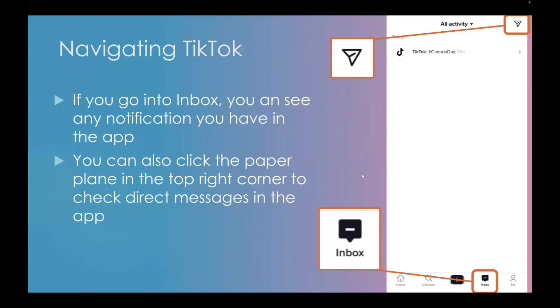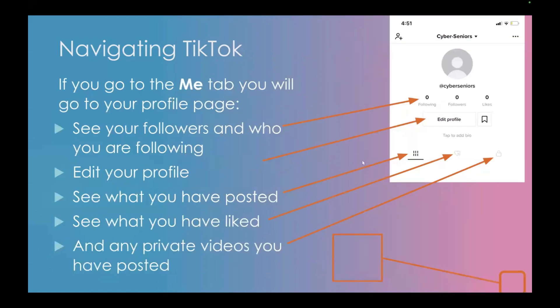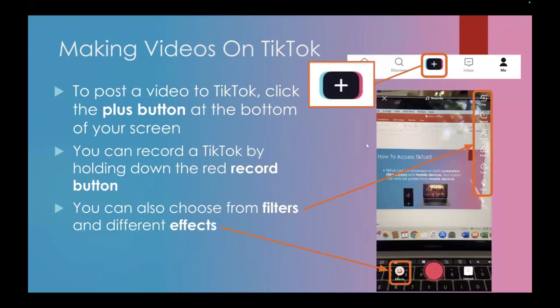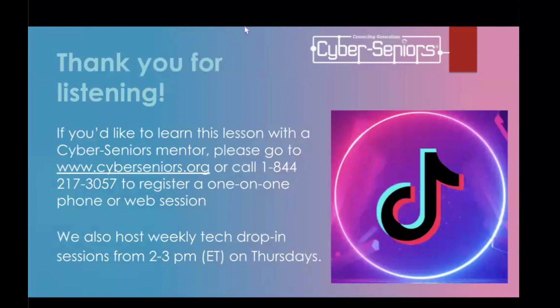In your inbox you can see any notifications and click the paper plane icon in the top right corner to check direct messages. In the 'Me' tab you'll see your profile page, who your followers are, who you're following, what you've posted, videos you've liked, and any private videos. To make a video, press the plus button at the very bottom center of your screen. You can record a TikTok by holding down the red record button. The effects button is on the left side of your screen, filters are toward the center, and uploads are on the right side.